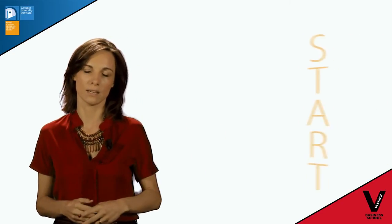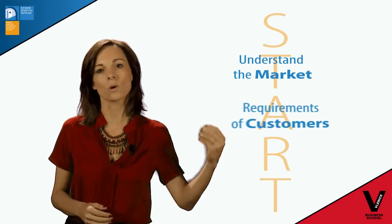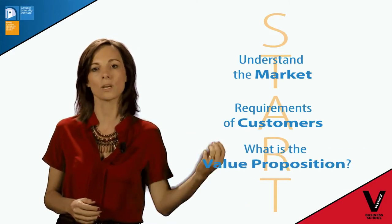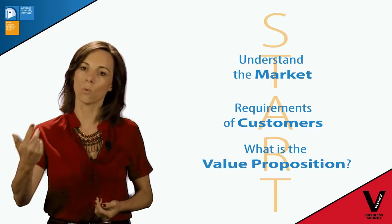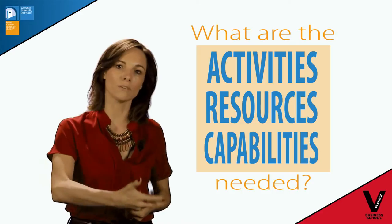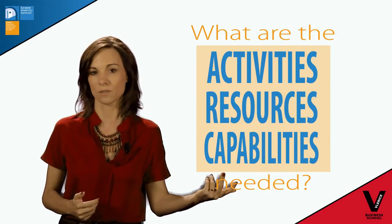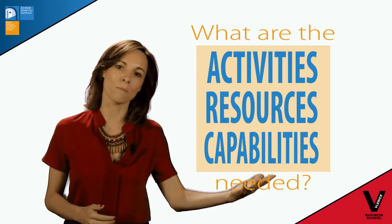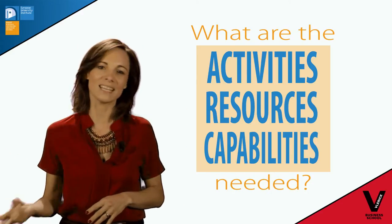Three recommendations for using the Business Model Canvas and making it work for you. What I personally always find best is to work with the framework from right to left — that means you start from the market side. You work outside in: you start with understanding the market, the requirements of customers, the value proposition that would work for them. And then you ask yourself, what are the activities, resources, and capabilities needed for us to deliver that value proposition to those customers? I always find it better to work from the market outside in than to work from the inside out.